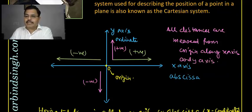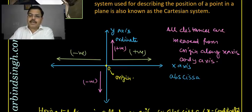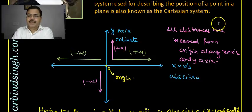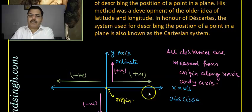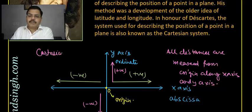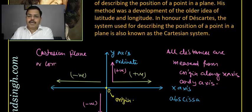This system of four lines is called the Cartesian plane, also known as the coordinate plane, named in honor of Descartes.